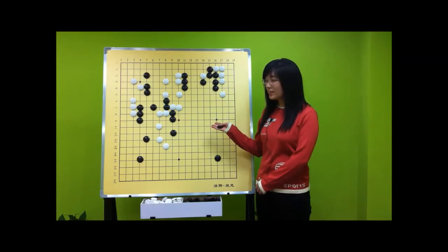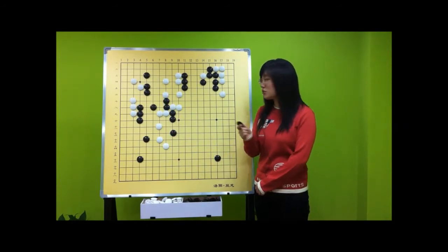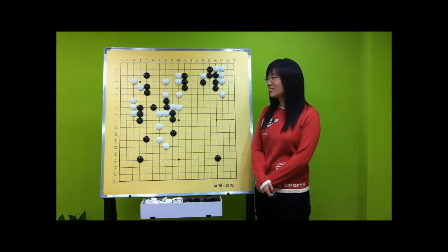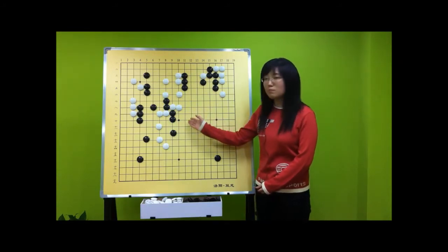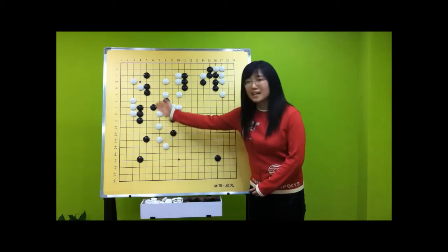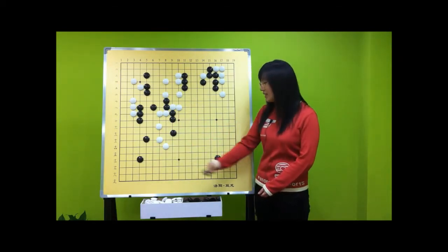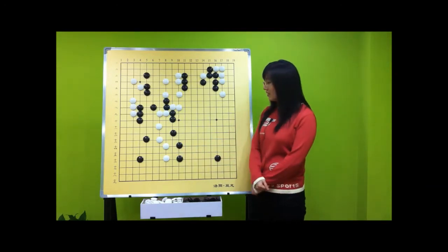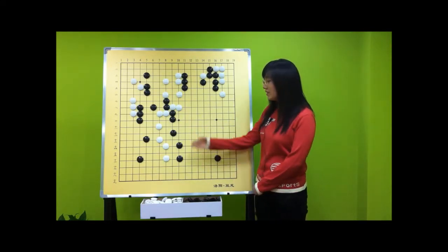Now let's look at this more difficult example. In this game, we can see that White has a weak group. It is Black's turn to attack White — which direction will you choose? Here, Black doesn't have any base, so this is Black's weak place. And here is Black's strong place. We should attack from weak to strong, so the answer should be here. If White runs, we can keep chasing, and Black becomes stronger with a little moyo here. So this is the right direction.